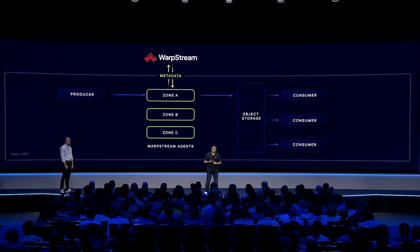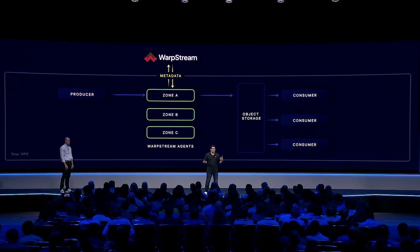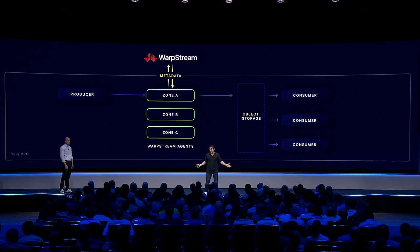With the agents running in the customer's cloud account and the control plane running in ours, the only infrastructure in the customer's account are these stateless agents that are super easy to manage. They have no topic partition leaders, no local disks. You can just add and remove containers — that's how you scale the cluster up and down. You never have to rebalance partitions. If you accidentally delete all of them, you won't lose any data. Really easy to manage.